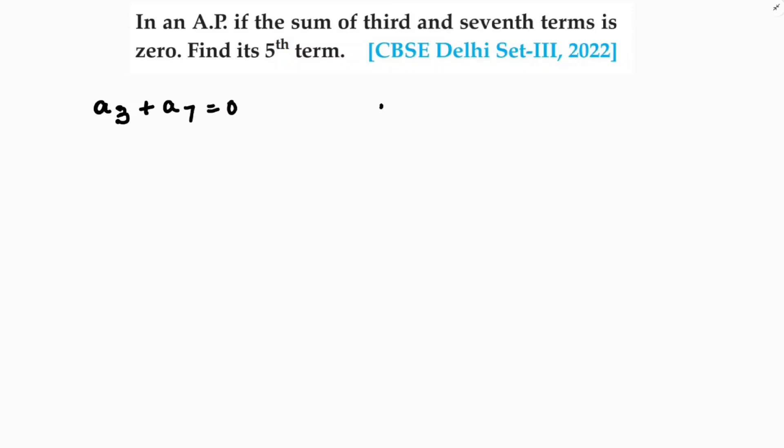I need to find fifth term. So here an formula is a plus n minus 1 into d. So a3 will be a plus 3 minus 1 into d, which is a plus 2d.